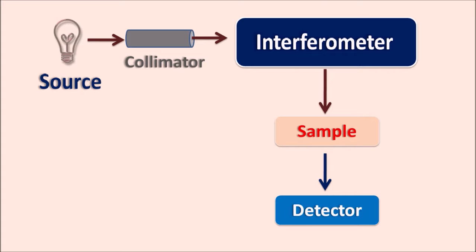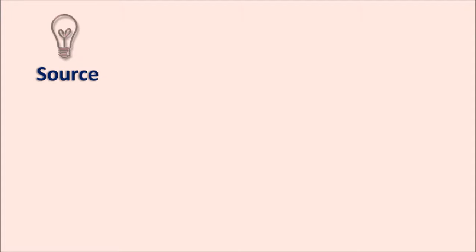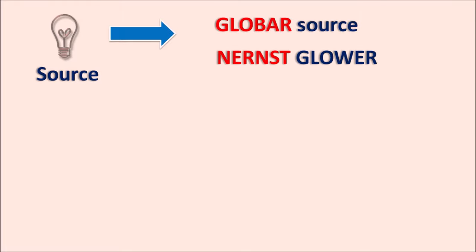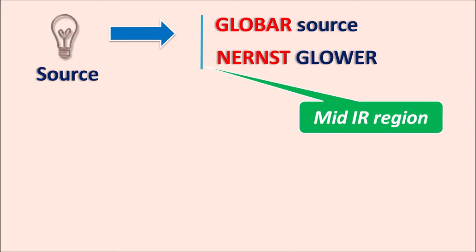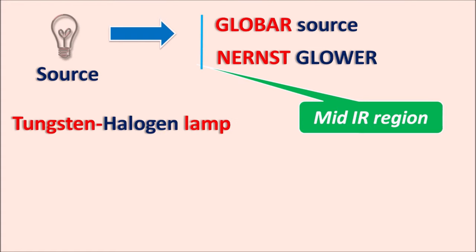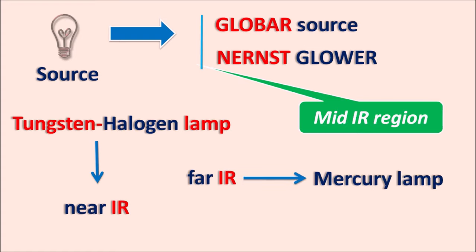After passing through the interferometer, the transmitted radiation comes perpendicular to the interferometer, is transmitted into the sample, and finally reaches the detector. For the source, we generally use the mid-IR region, for which we can use the glow bar source as well as the Nernst glower — both useful in the mid-IR region from 4000 to 400 cm⁻¹. A tungsten halogen lamp is used for the near-IR region, and a high-pressure mercury vapor lamp is used for the far-IR region.